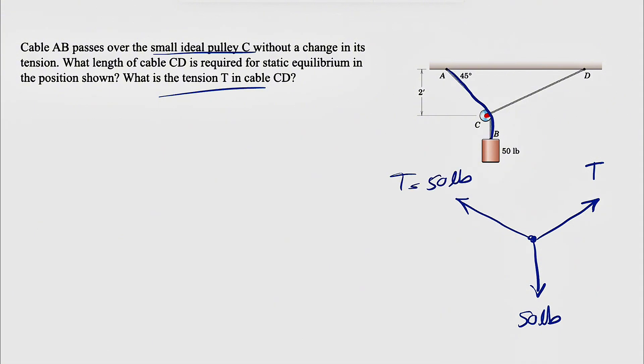This is also 50 pounds. Again, this is one single cable. And we know this angle is 45 degrees. So if that's 45 degrees, this angle here would be 45 degrees as well. And we can move on to our equilibrium equation.